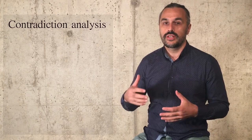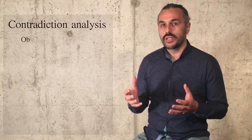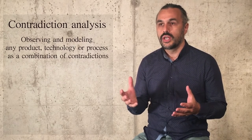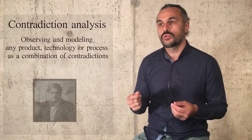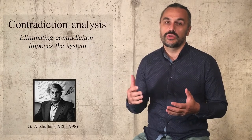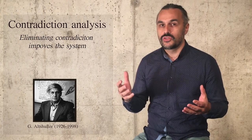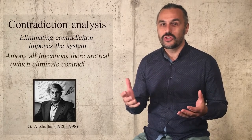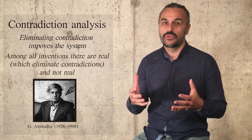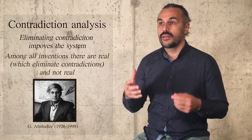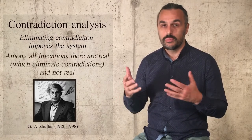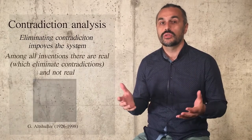The idea and advantage of contradiction analysis is that you start modeling any real product, technology, or process as a combination of contradictions. The message of Altshuller was that by eliminating contradictions, you are improving the system. Among all inventions, those that eliminate contradictions should be called real inventions. So finding and eliminating contradictions is the key to classical TRIZ — eliminating contradictions leads to out-of-box solutions and true inventions.